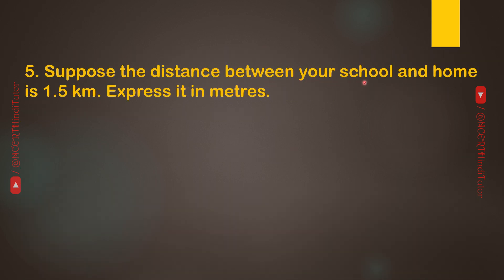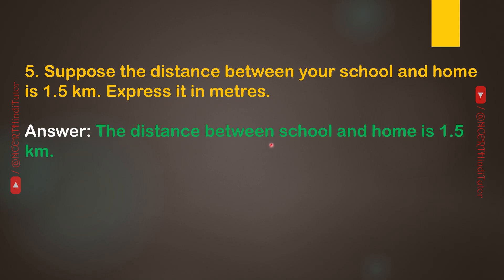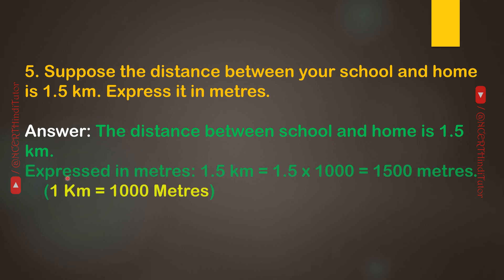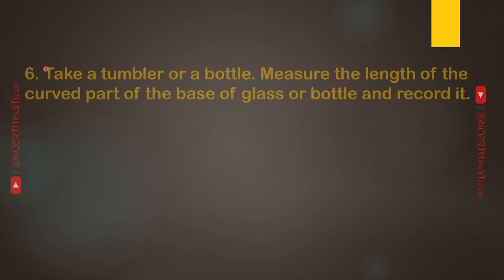Question 5: Suppose the distance between your school and home is 1.5 kilometers. Express it in meters. Answer: 1.5 kilometers is equal to 1.5 × 1000 = 1500 meters, because 1 kilometer is equal to 1000 meters.